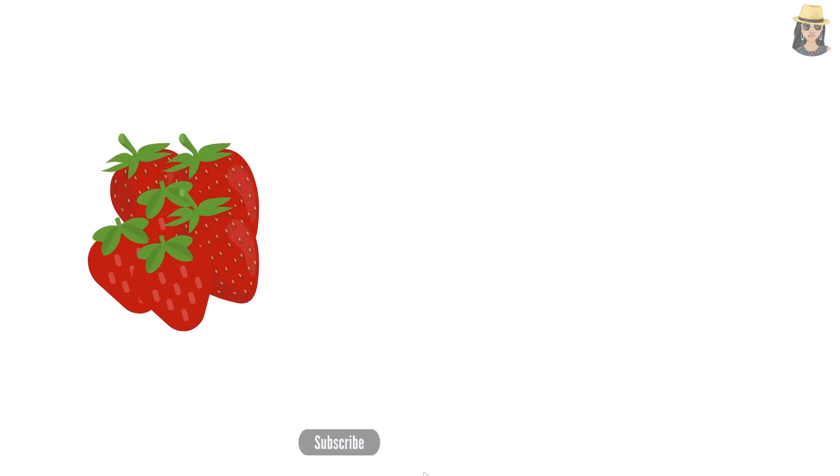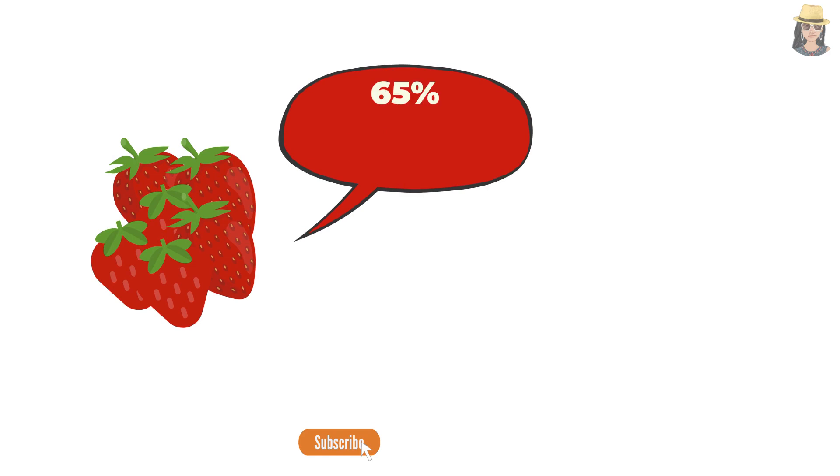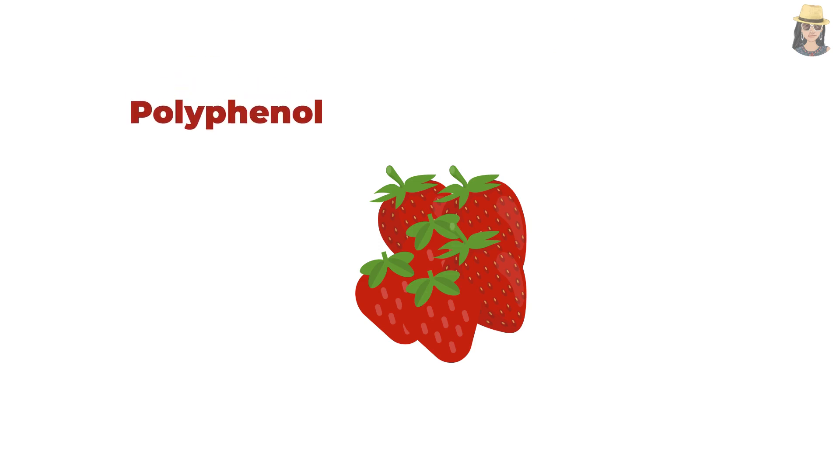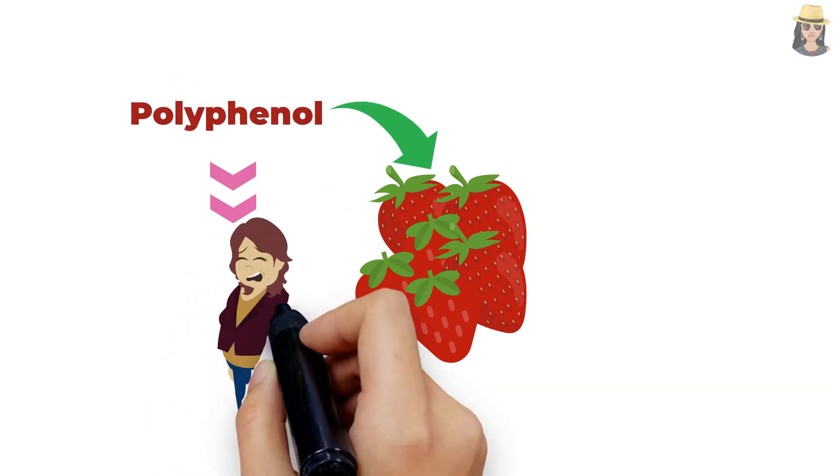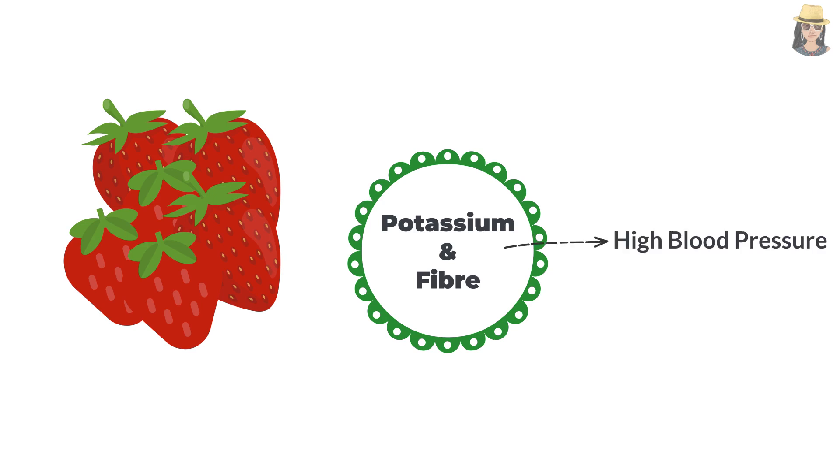100 grams of strawberries can give you up to 65% of the recommended value of vitamin C. Strawberries are rich in vitamin C, vitamin B, niacin, manganese and potassium which provide numerous health benefits. The polyphenol content found in strawberries proved to have a preventive effect on heart related disease. The potassium and fiber content in strawberries have a regulating effect over high blood pressure and blood sugar.